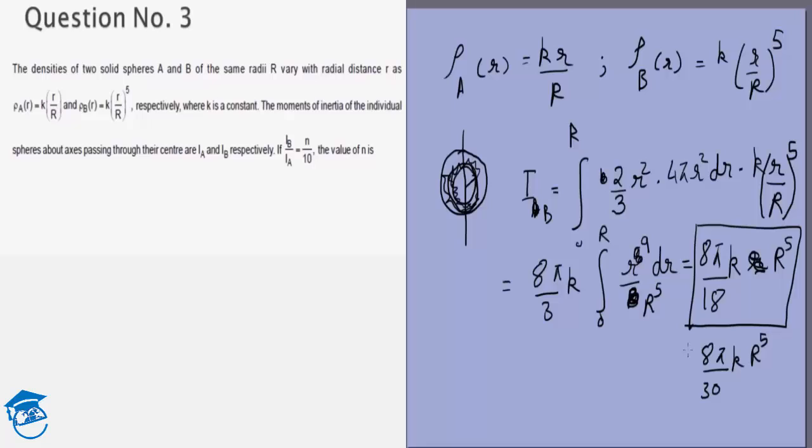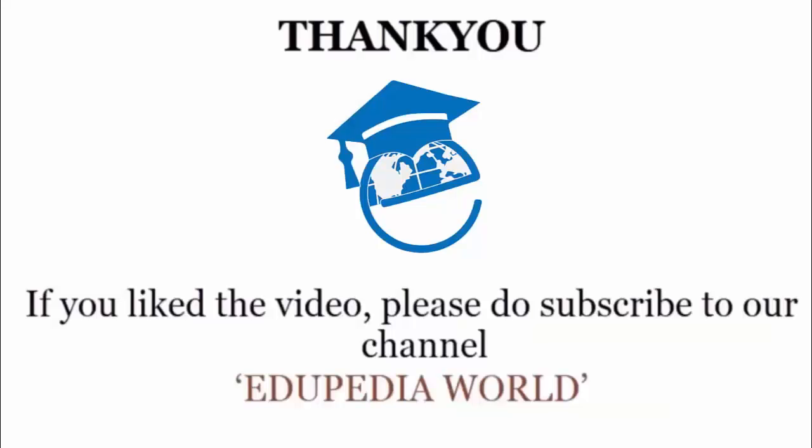This is I_B, and we want to find I_B/I_A in the question. So that will be this term divided by this term, that will be 18/30 which we can cancel, and we can see it is 6/10. So the answer is n equals 6. Thank you.